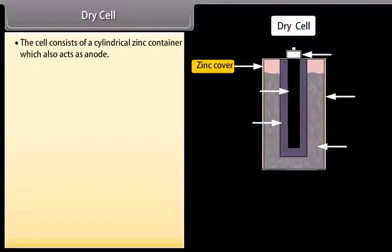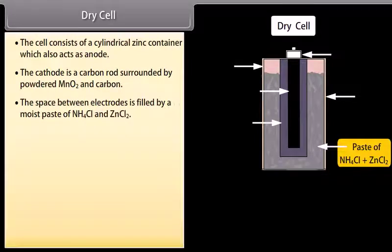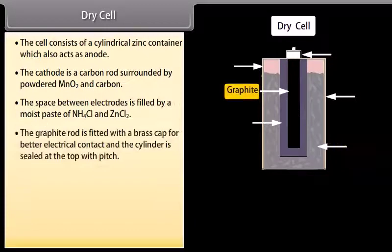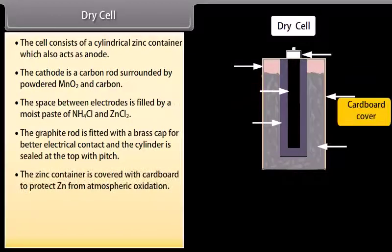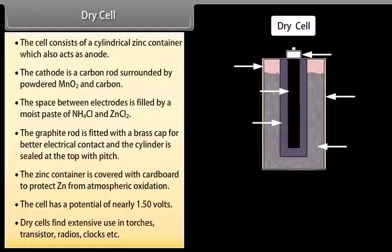Dry cell: The cell consists of a cylindrical zinc container which also acts as anode. The cathode is a carbon rod surrounded by powdered MnO2 and carbon. The space between electrodes is filled by a moist paste of NH4Cl and ZnCl2. The graphite rod is fitted with a brass cap for better electrical contact and the cylinder is sealed at the top with pitch. The zinc container is covered with cardboard to protect Zn from atmospheric oxidation. The cell has a potential of nearly 1.50 volts. Dry cells find extensive use in torches, transistors, radios, clocks, etc.